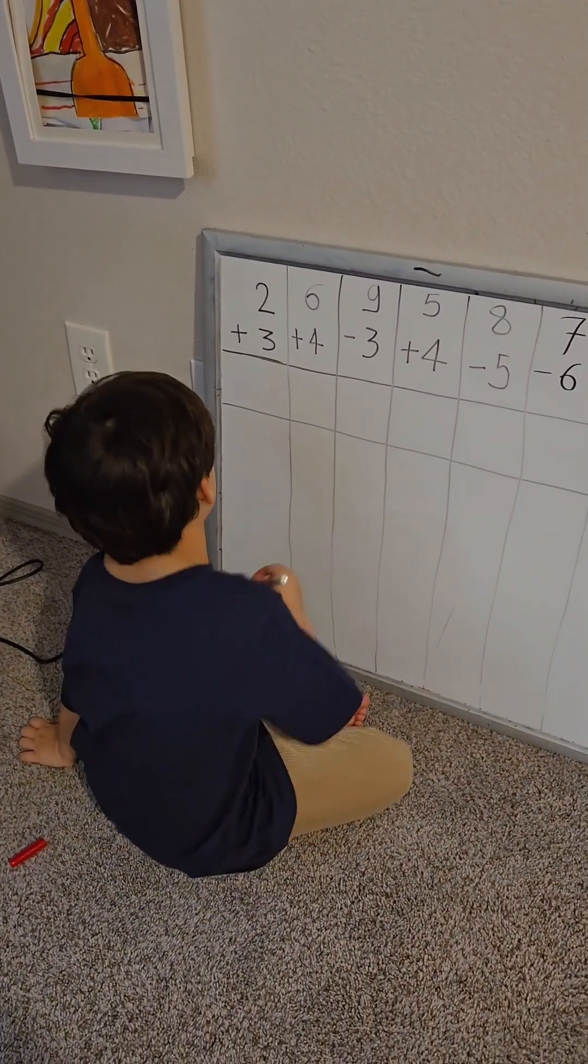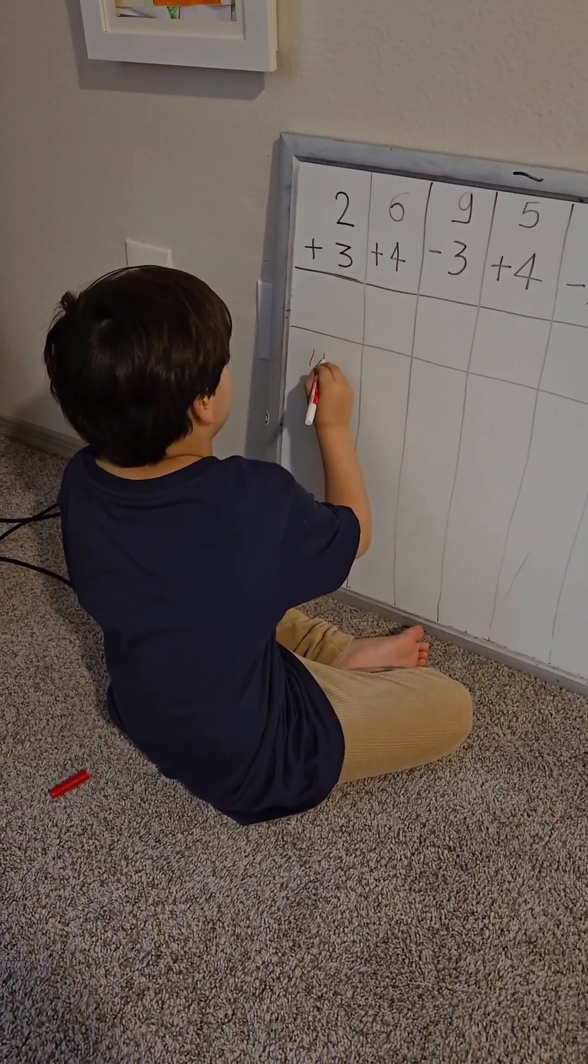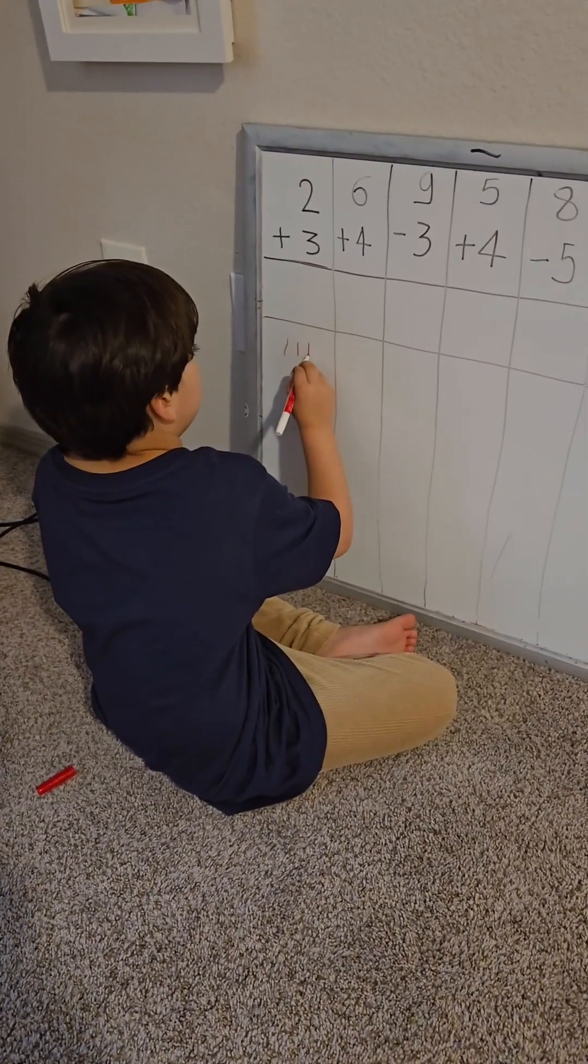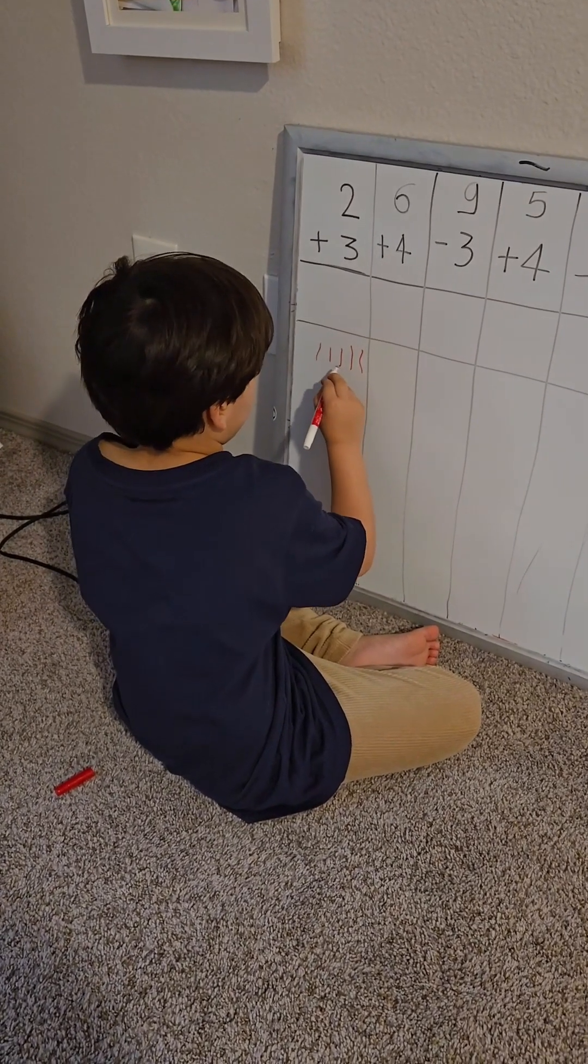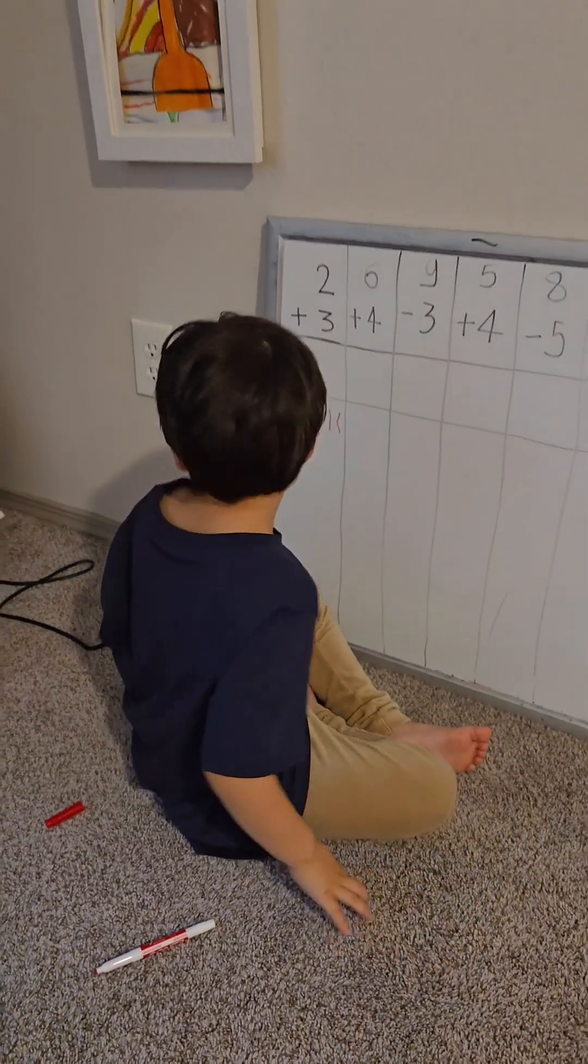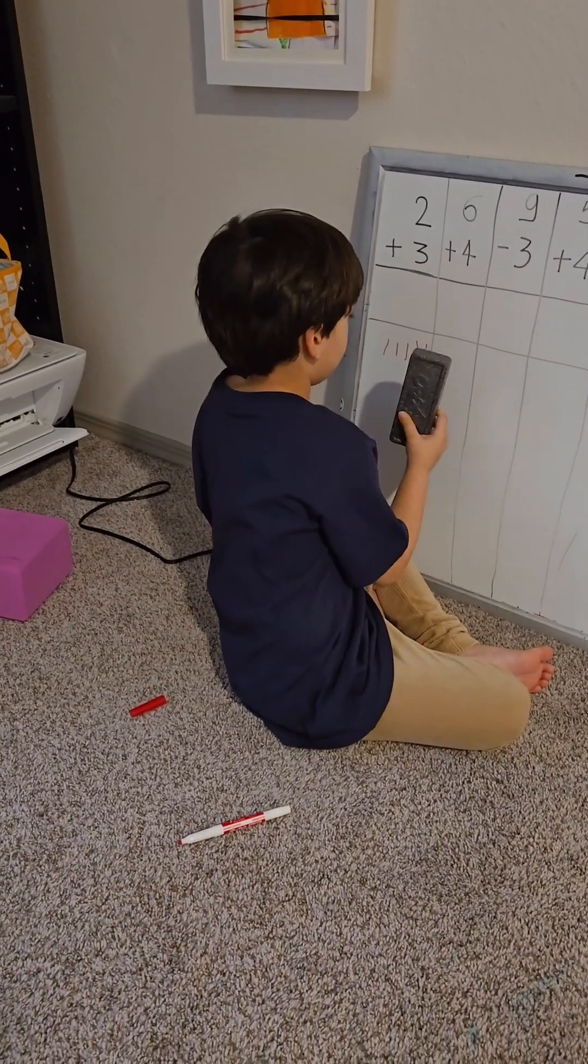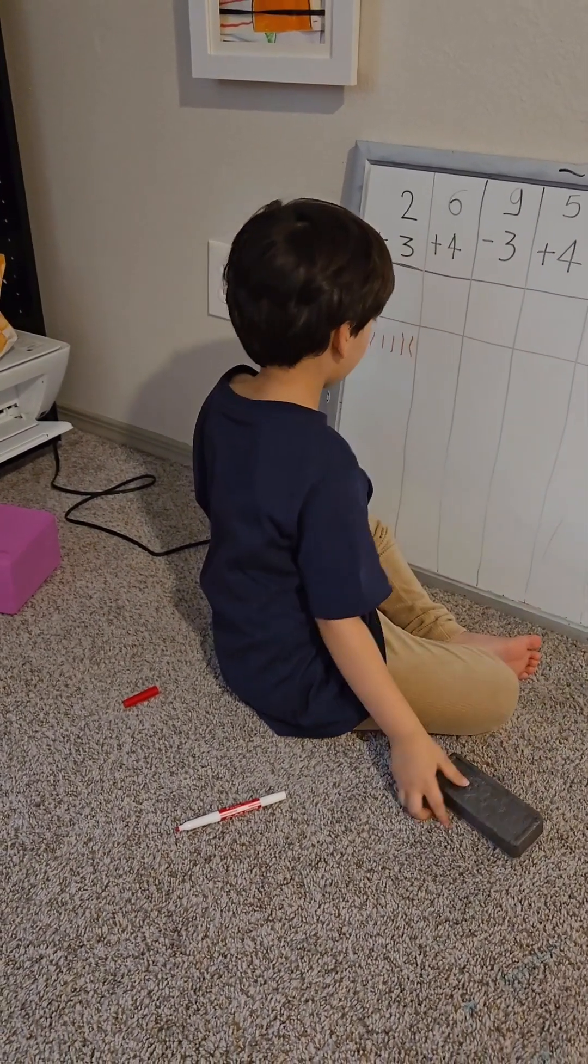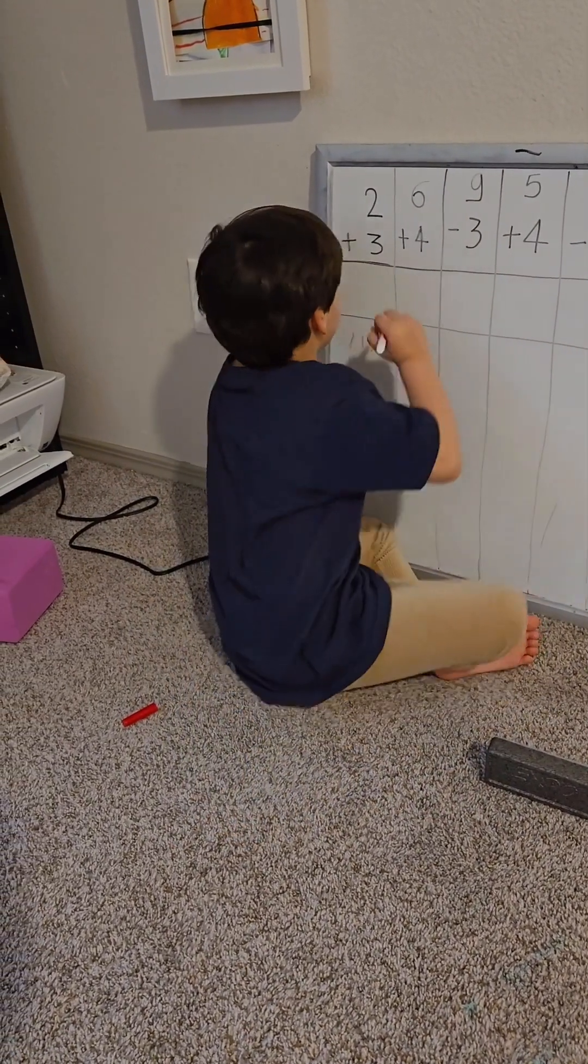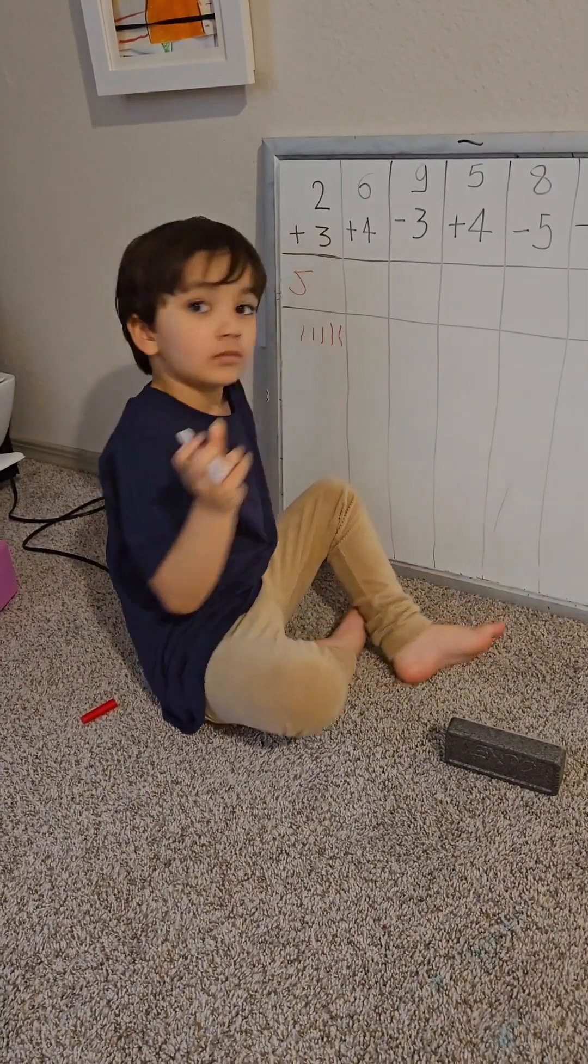2 plus 3. First I add 2, then I add 3. 1, 2, 3. I did 5. Yeah, answer is 5, right? Write the answer. You don't have to erase it, you have to write the answer. 2 plus 3 is equal to 5, so write the answer 5.